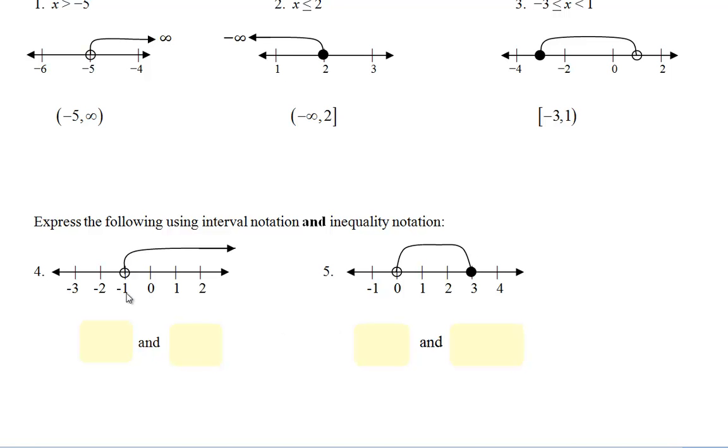In this one if I do interval notation first, the shading starts at negative 1, it goes to infinity. I need parentheses around those two numbers because it's open and infinities always get parentheses. Now in the inequality notation I would have x is greater than negative 1. So there's that one.